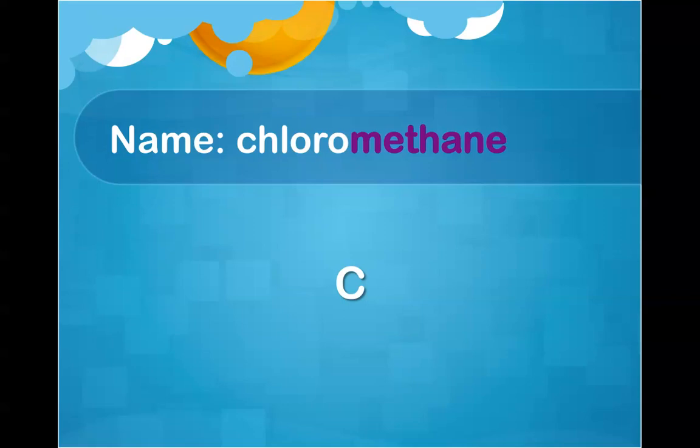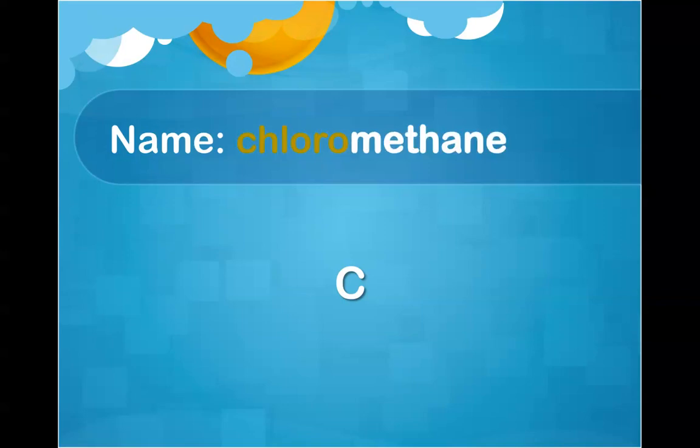Our first example is chloromethane. Methane is telling me that I have one carbon, and chloro is telling me I have one Cl attached. Very importantly, you need to fill in the hydrogens accordingly around the carbons so they have their special four bonds.